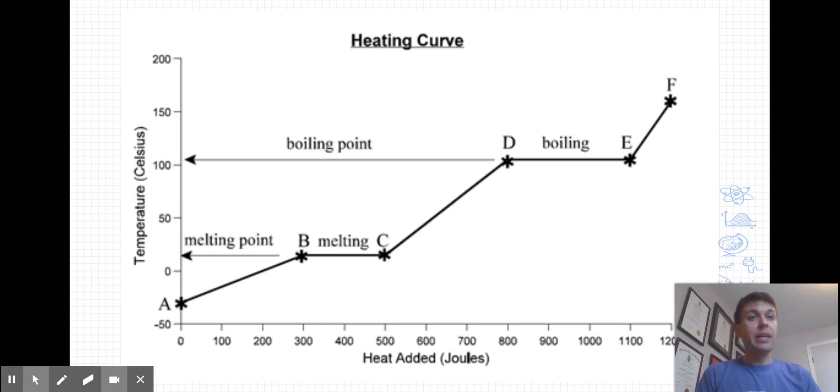Now, D is the point at which those particles now have enough kinetic energy in which they can totally overcome the intermolecular forces of attraction. And once they can break those forces of attraction, they can start to escape into the gas phase.